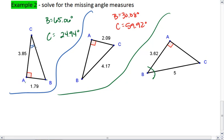I'm given an adjacent side and a hypotenuse, meaning I'll use cosine. Cosine B equals 3.62 over 5.